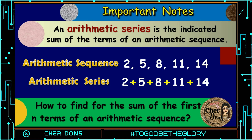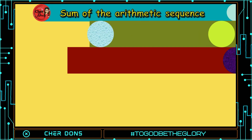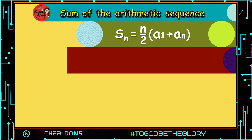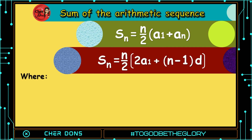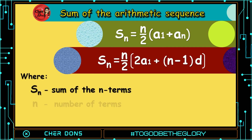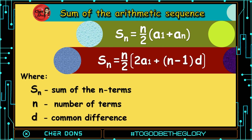How do we find the sum of the first n terms of an arithmetic sequence? Here is the formula: S of n is equal to n over 2 multiplied by (a sub 1 plus a sub n). We use this formula if the last term is given. Or, S of n is equal to n over 2 multiplied by (2 times a sub 1 plus quantity n minus 1 multiplied by d). We use this formula if the last term is not given. Where S of n is the sum of the n terms, n is the number of terms, d is the common difference, a sub n is the nth term, and a sub 1 is the first term.